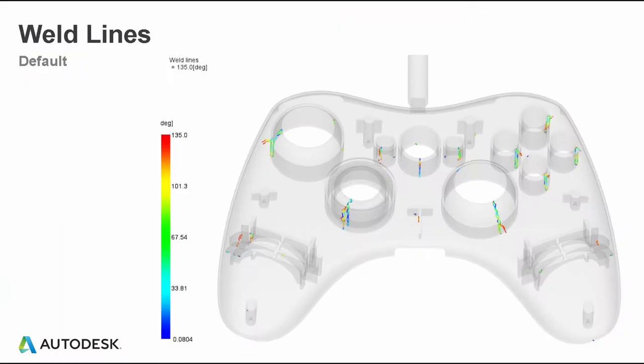Weld lines are a plot I would encourage you to evaluate. The stock view to look at weld lines is the weld line degree of formation — that's not a temperature, it's a degree of formation on how the weld line would form. Anything blue or a lower value is a weak butt weld. Anything in red is more of a meld line and would have a potentially stronger area than a weaker butt weld.